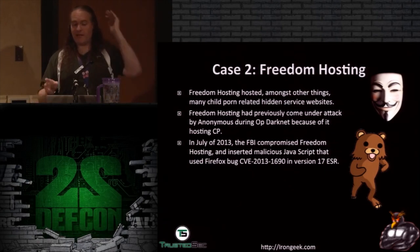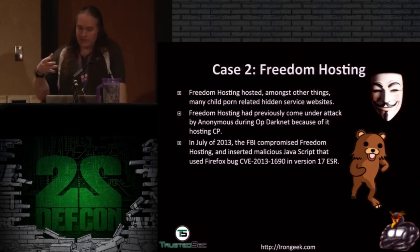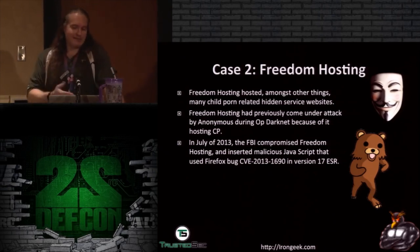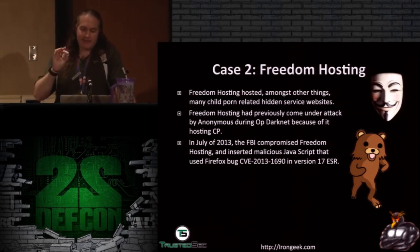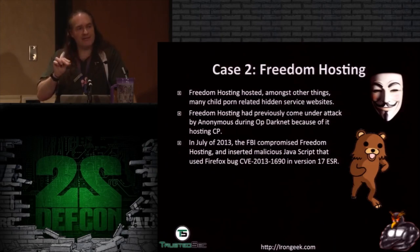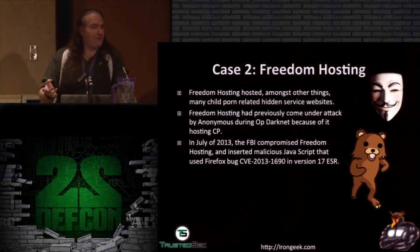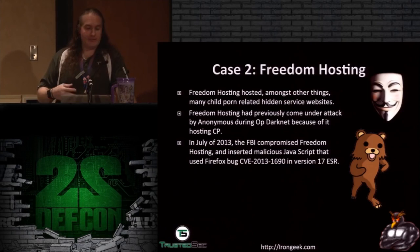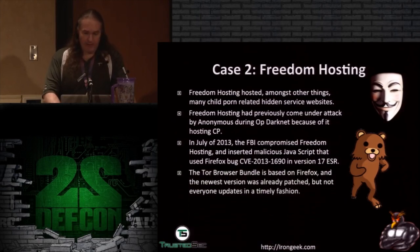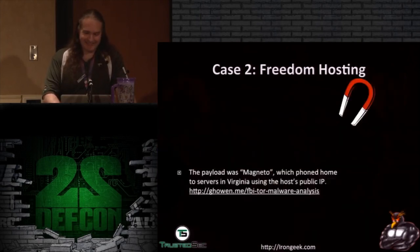On July 13th, the FBI finally compromised one of Freedom Hosting's boxes and inserted malicious JavaScript. There was a CVE vulnerability that existed in Firefox version 17 Extended Support Release, and a recent version of the Tor Browser Bundle happened to be using that version of Firefox, so it was vulnerable. Tor had already updated the package — if all these people had updated in time, they wouldn't have been caught. But a lot of people don't update in a timely fashion.